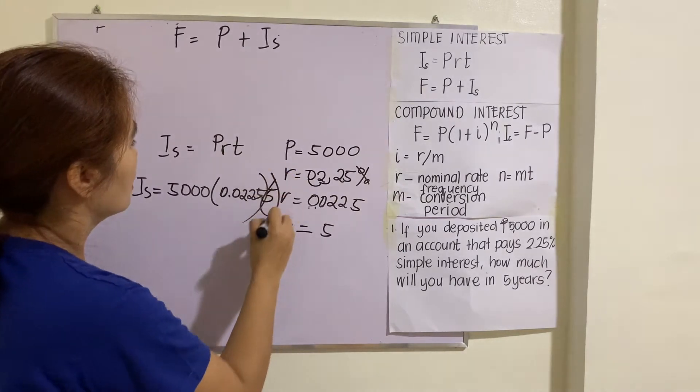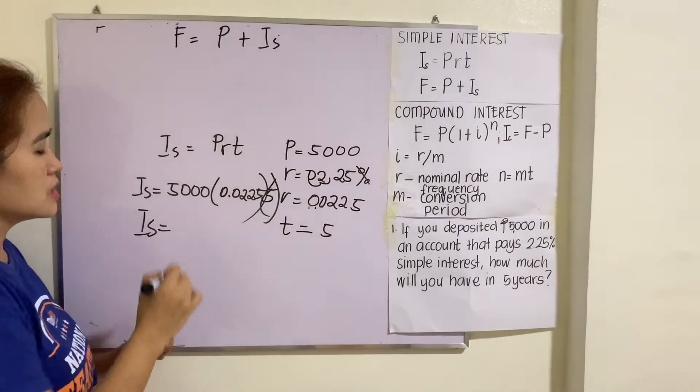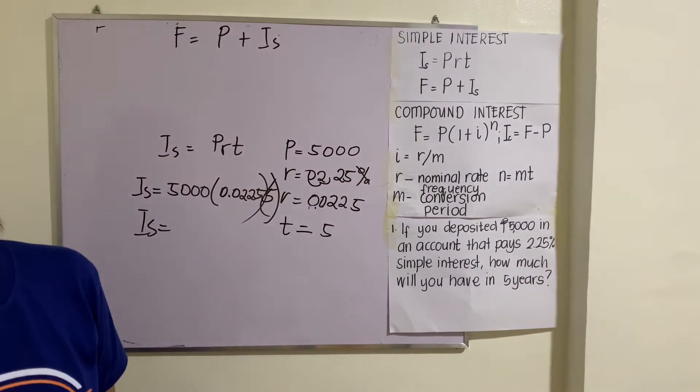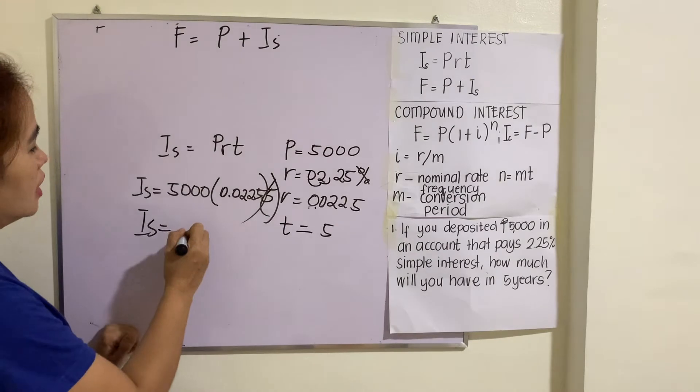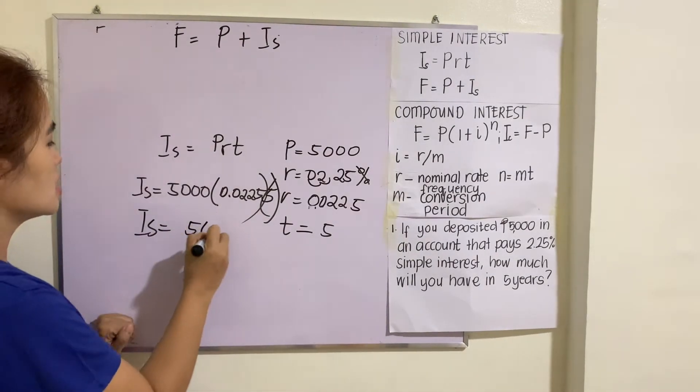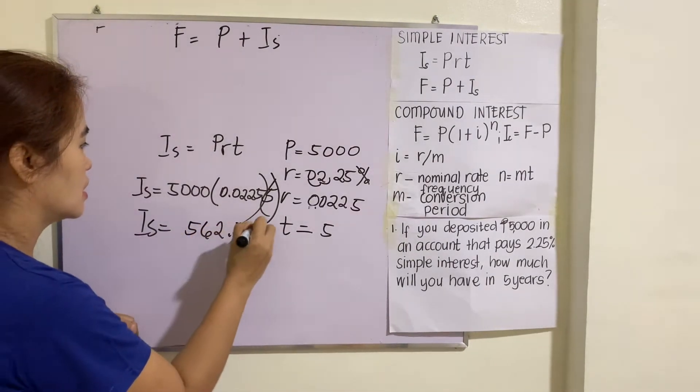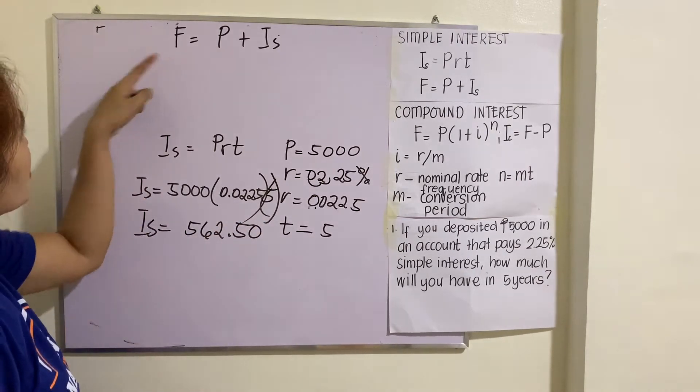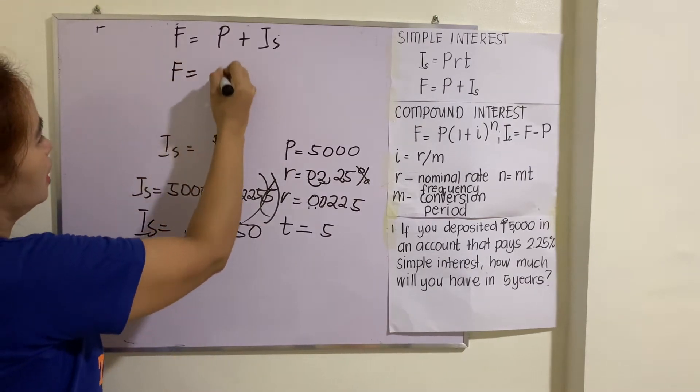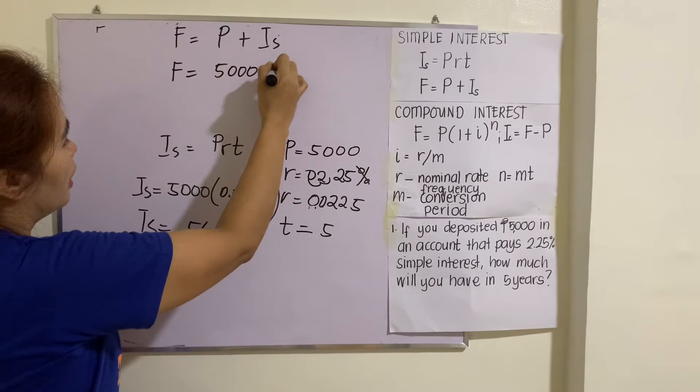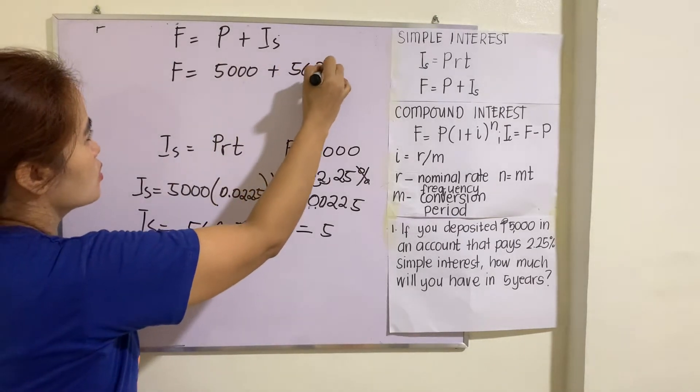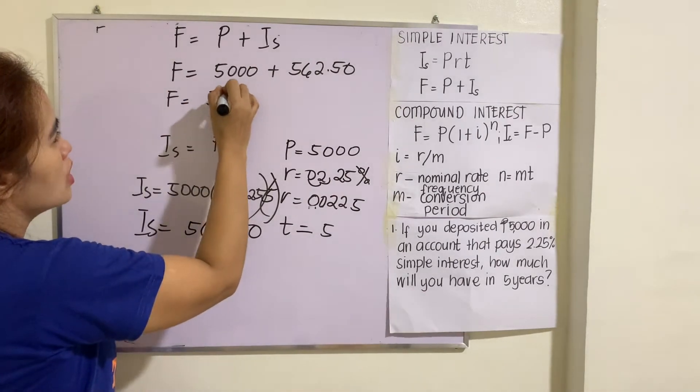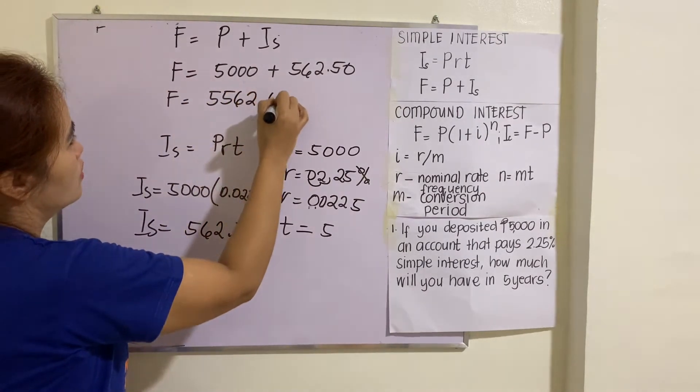So that will be I_s = $562.50. Therefore F = 5,000 + 562.50. You will have $5,562.50.